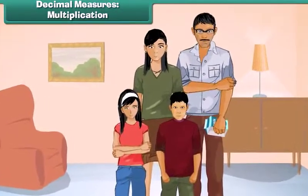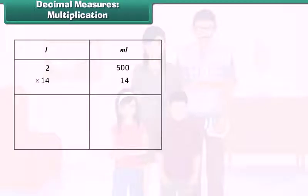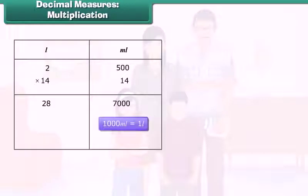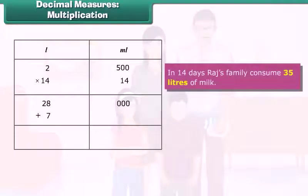Raju's family consumes 2 liters and 500 milliliters of milk per day. How much milk is consumed in 14 days? Multiplying 14 by 2 liters and 500 milliliters, we get 28 liters and 7,000 milliliters. Since 1,000 milliliters equals 1 liter, 7,000 milliliters equals 7 liters. Adding 7 liters to 28 liters, Raju's family consumes 35 liters of milk in 14 days.